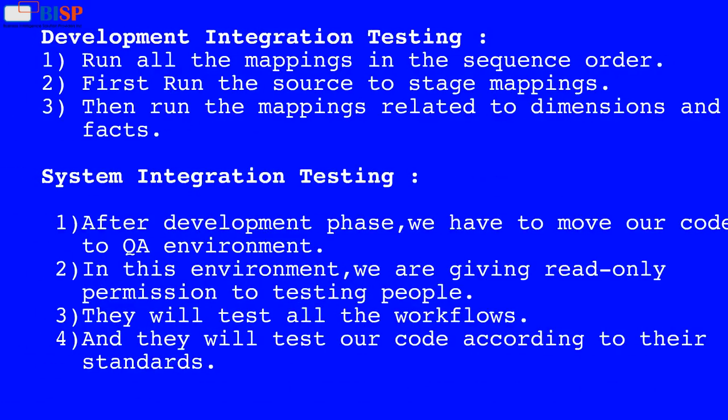Development Integration Testing: Run all the mappings in sequence order. First, run the source to stage mappings, then run the mappings related to dimensions and facts.